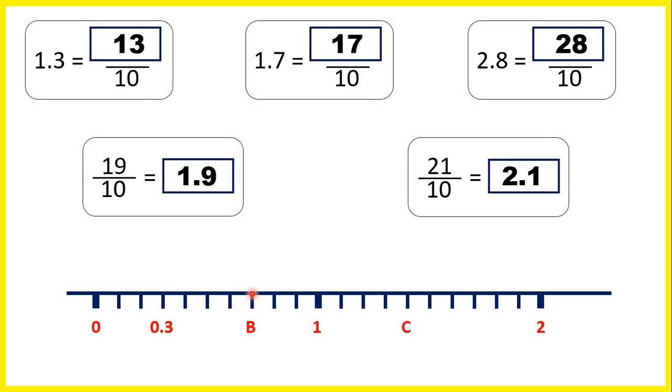B is the 7th line after 0. So that's 7 tenths, or 0.7.